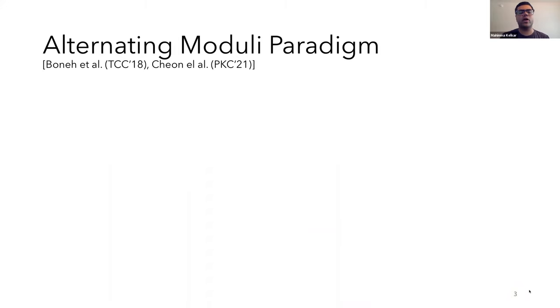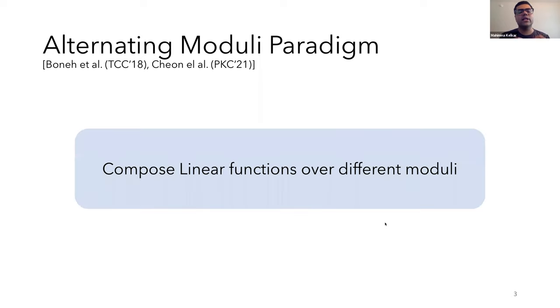So towards settling this apparent conflict, a line of work started by Boneh et al. and continued by Cheon et al. looked at a new paradigm for constructing primitives. This was advertised as part of the so-called crypto-dark matter, which they defined as a large space of unexplored areas of cryptography, focusing primarily on simple constructions and efficient protocols for practical applications. Their focus was on this alternating moduli paradigm, where the high-level idea is to have constructions that compose linear functions over different moduli. And linear functions are easy to evaluate, so these constructions will be quite efficient. The security argument for these constructions needs to be carefully analyzed. And the two papers I mentioned initially started the study in this direction.